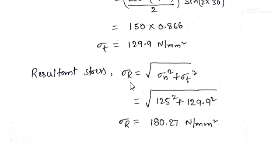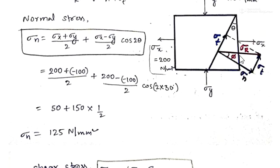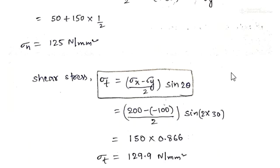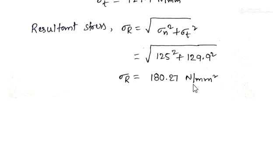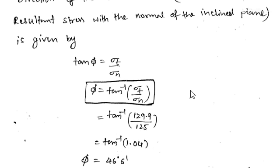The resultant stress is given by: σr = √(σn² + σt²). From the diagram, this is simply the hypotenuse of the triangle formed by σn and σt. With σn = 125 N/mm² and σt = 129.9 N/mm², substituting and simplifying gives the resultant stress as 180.27 N/mm².